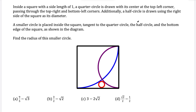A half circle is drawn using the right side of the square as its diameter, so the center is on the right side and it swings out. Then a smaller circle is placed inside the square, tangent to the quarter circle, tangent to the half circle, and also tangent to the bottom edge of the square. Our goal is to find the radius of the smaller circle.